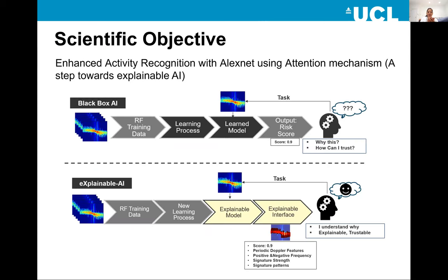My scientific objective is to enhance activity recognition using AlexNet only, but I'll embed a mechanism called attention mechanism. The attention mechanism is a small step towards explainable AI, and it can be trusted more than just using black box AI.